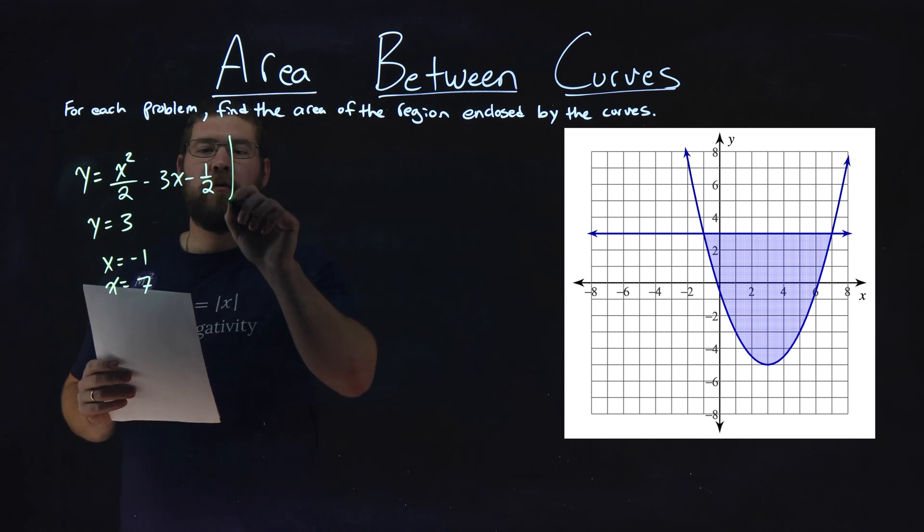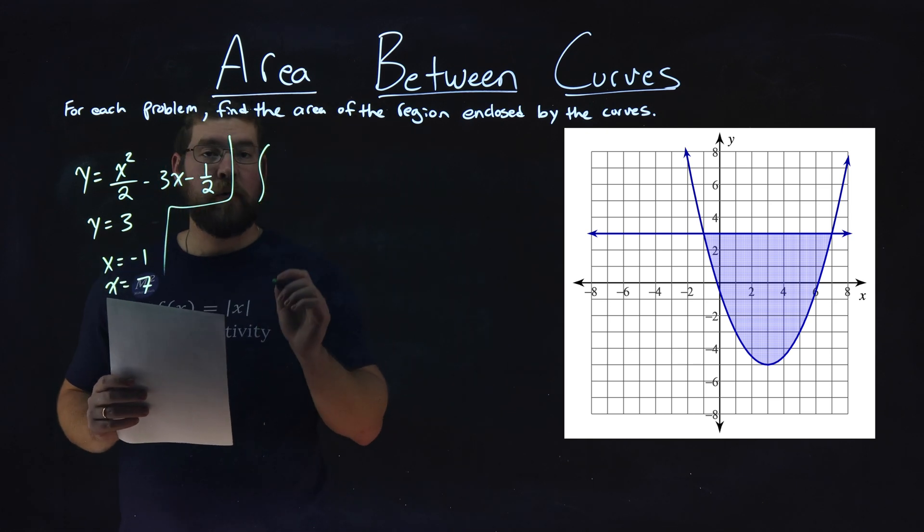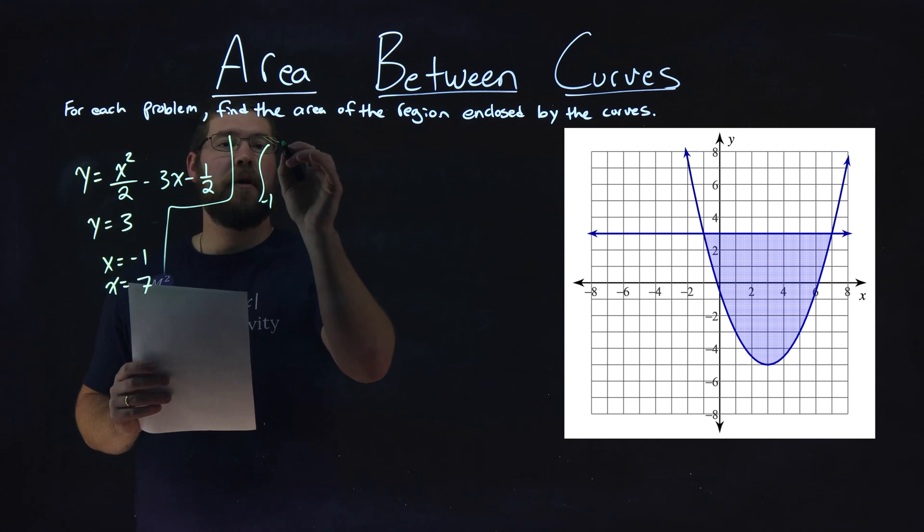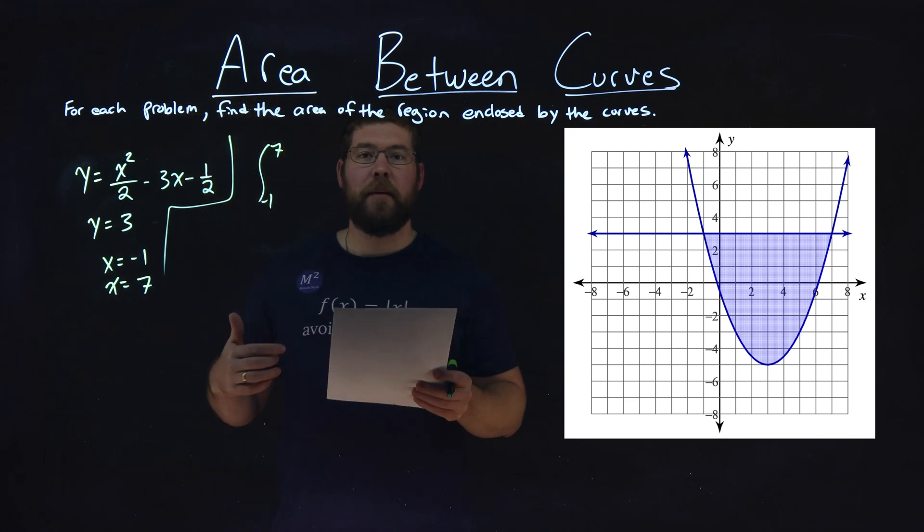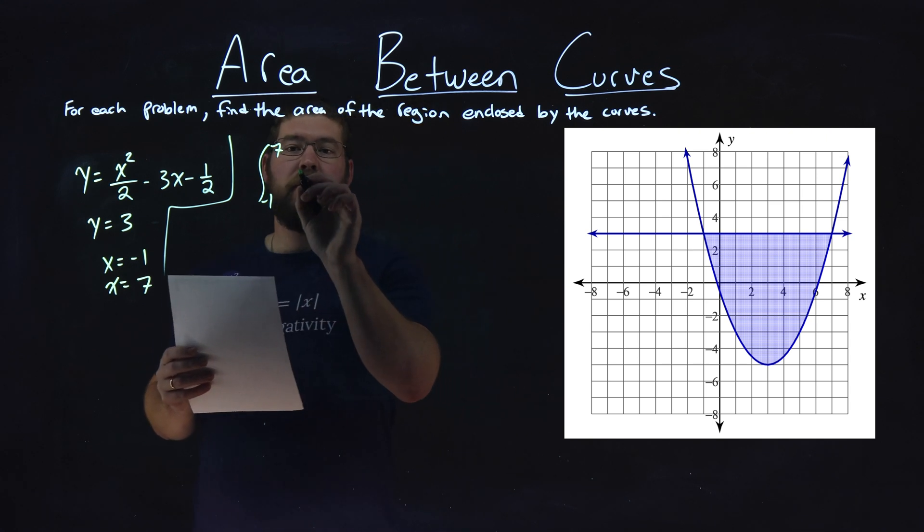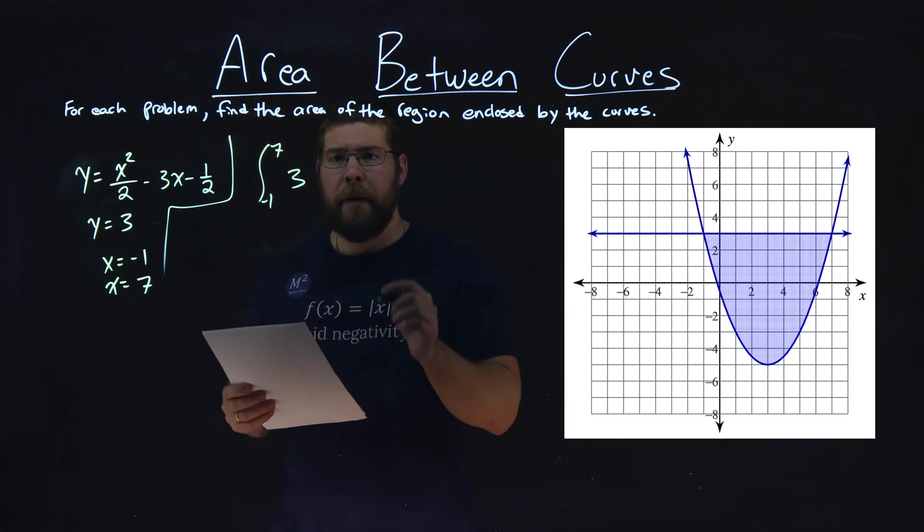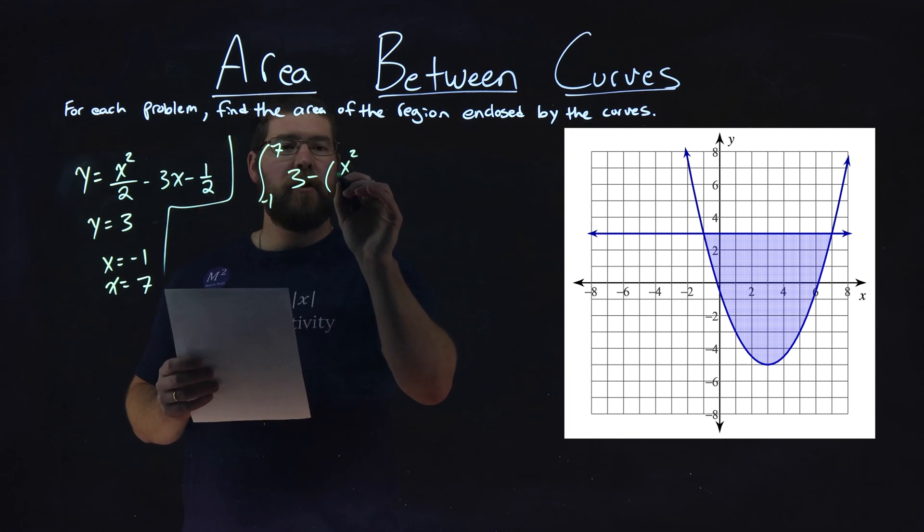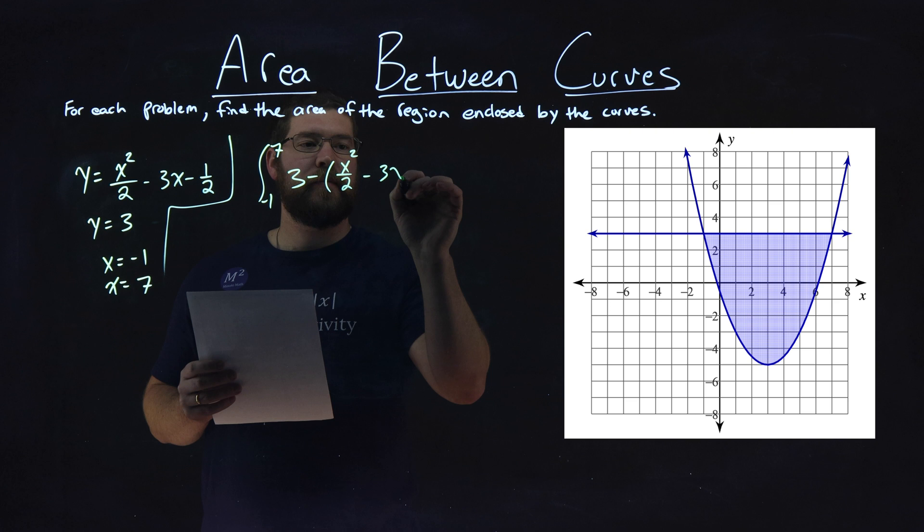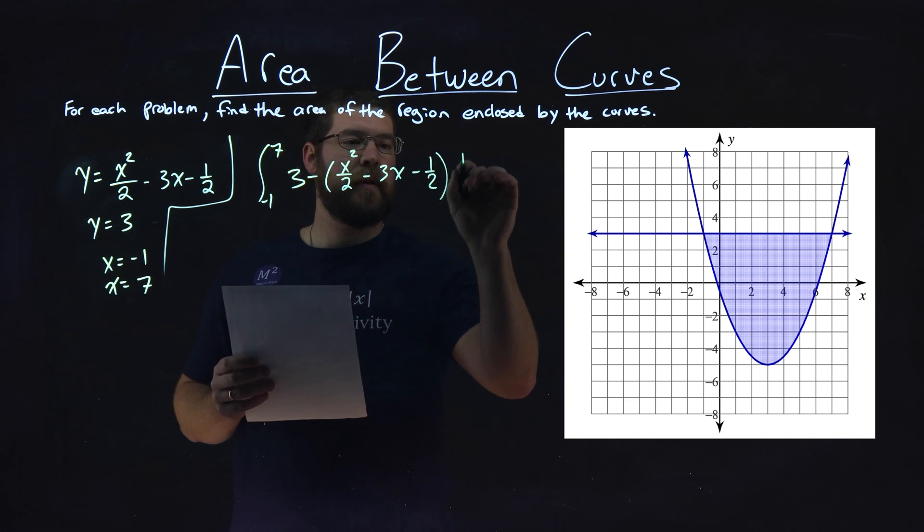So with that being said, we need to create our integral from our lower bound negative 1 to our upper bound 7. We want to integrate, and we want to have the top equation first. The top equation here being 3 minus the second equation, the bottom equation: x squared over 2 minus 3x minus one-half dx. And we set up this integral now where we can just solve it and get our answer.